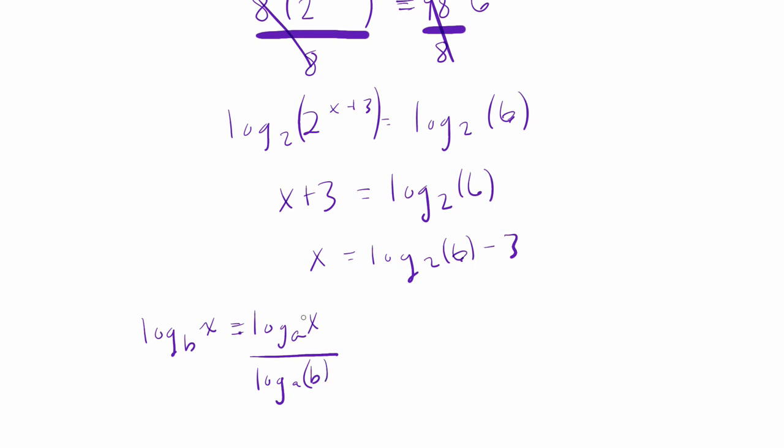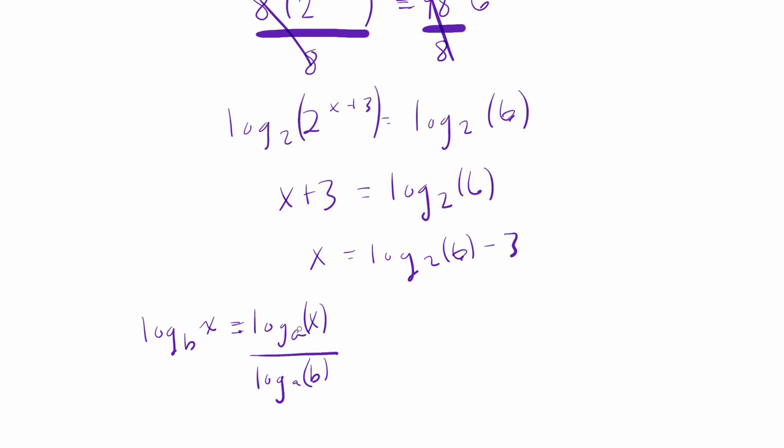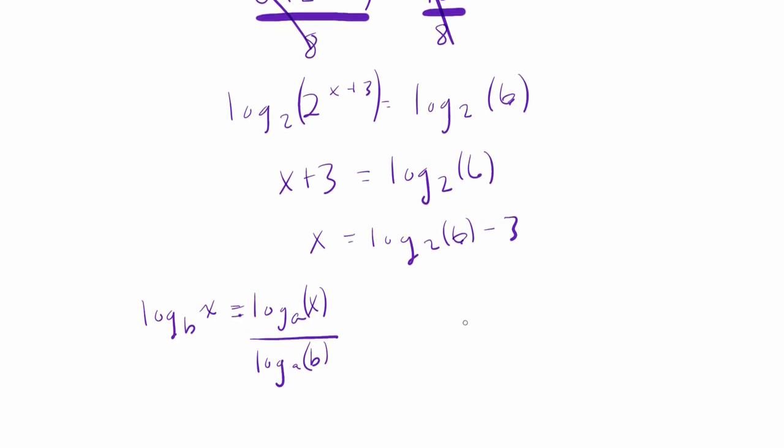So in other words, you can change the base of a logarithm. Right here, our b value is 2, and we want to change it to our a value, our a base is e. That's the natural log. Remember, that natural log of x really means the log base e of x.